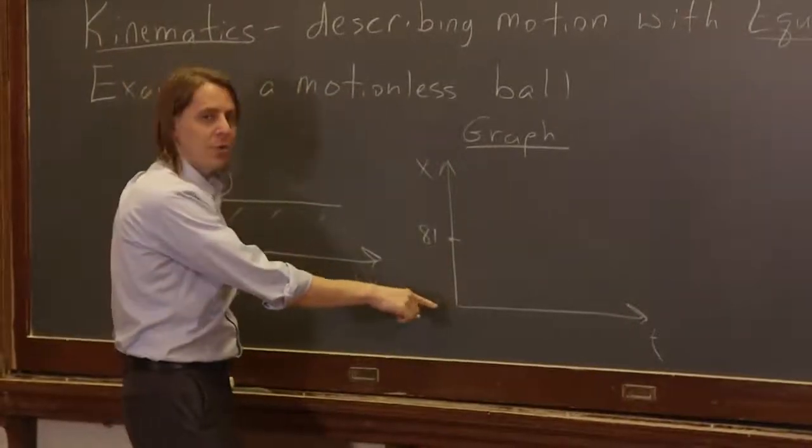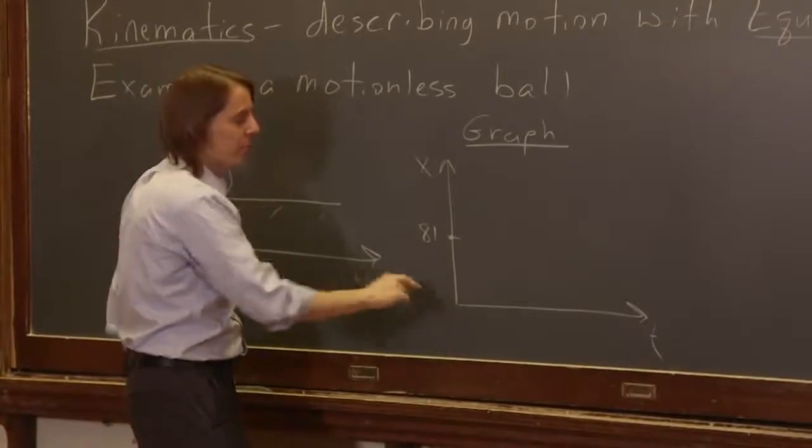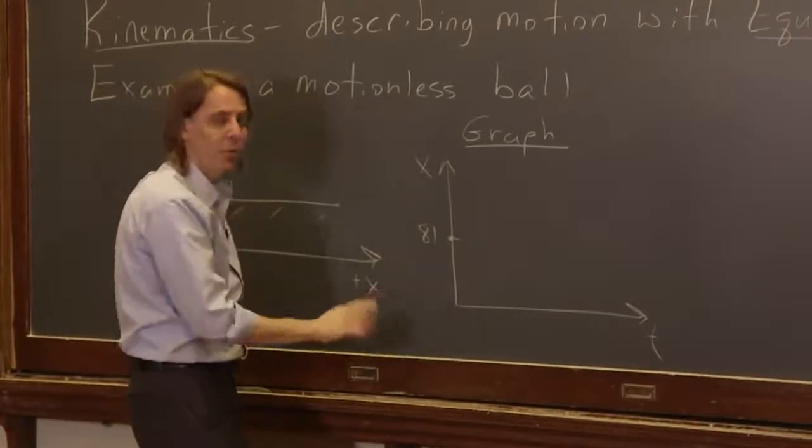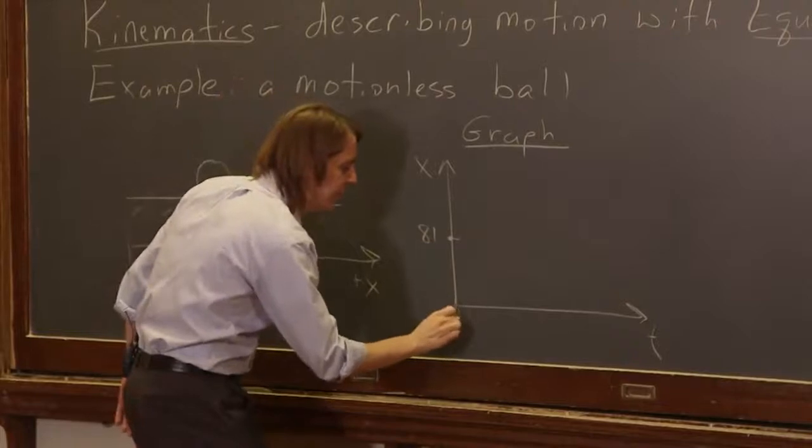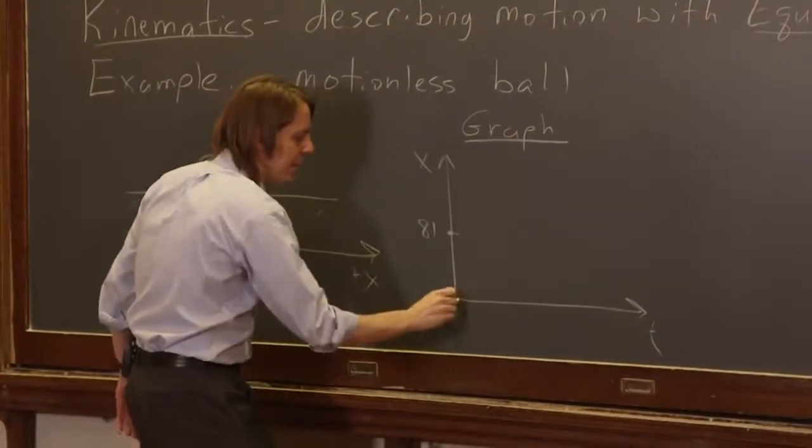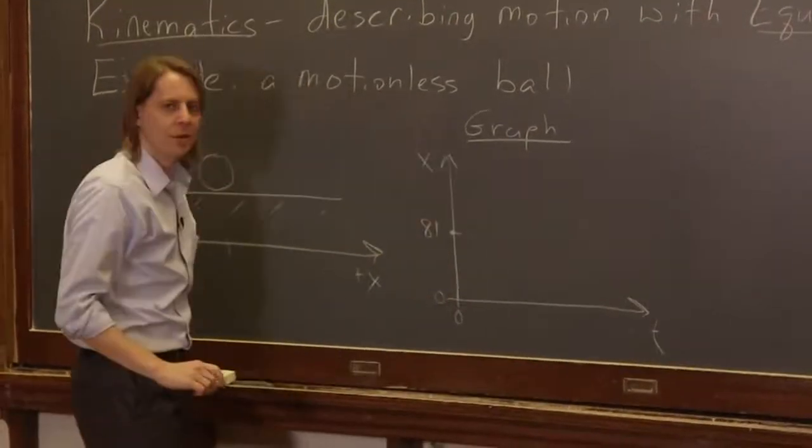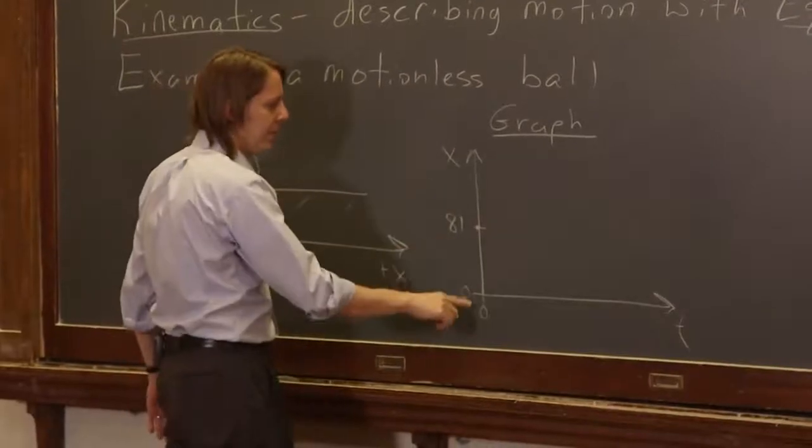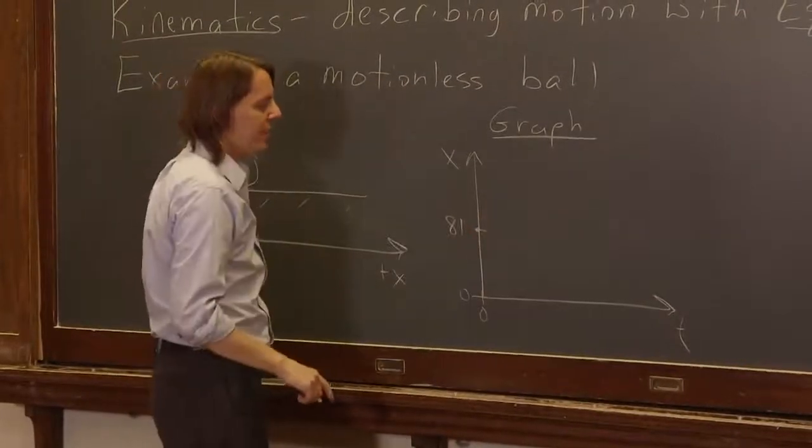This is the origin. Mathematically, you think of the origin as where the axes cross. And in physics for now, we will also make it the origin. So this is 0 in time and 0 in position. And then we've moved up to 81 centimeters for the position of the ball.